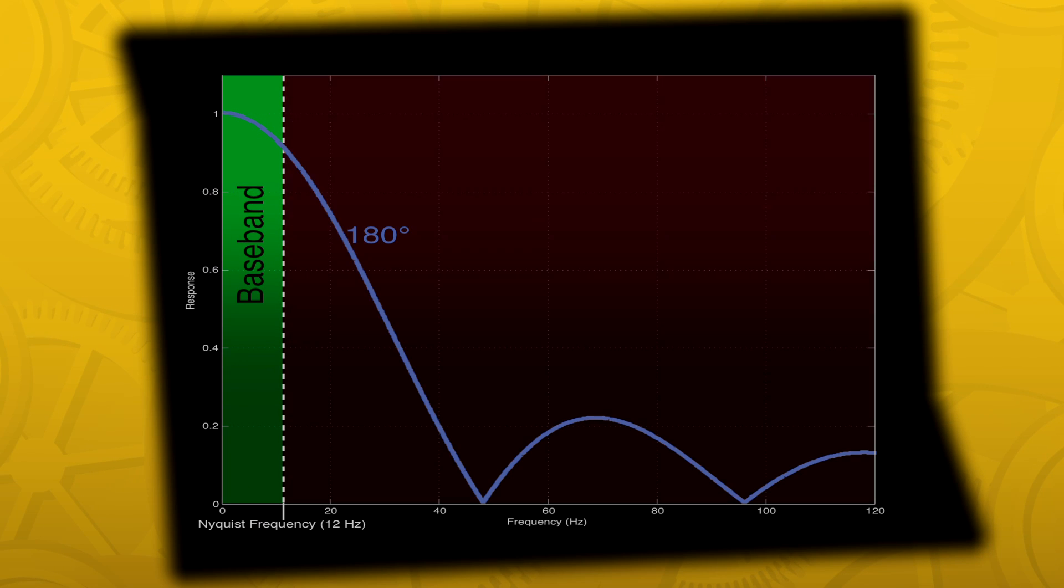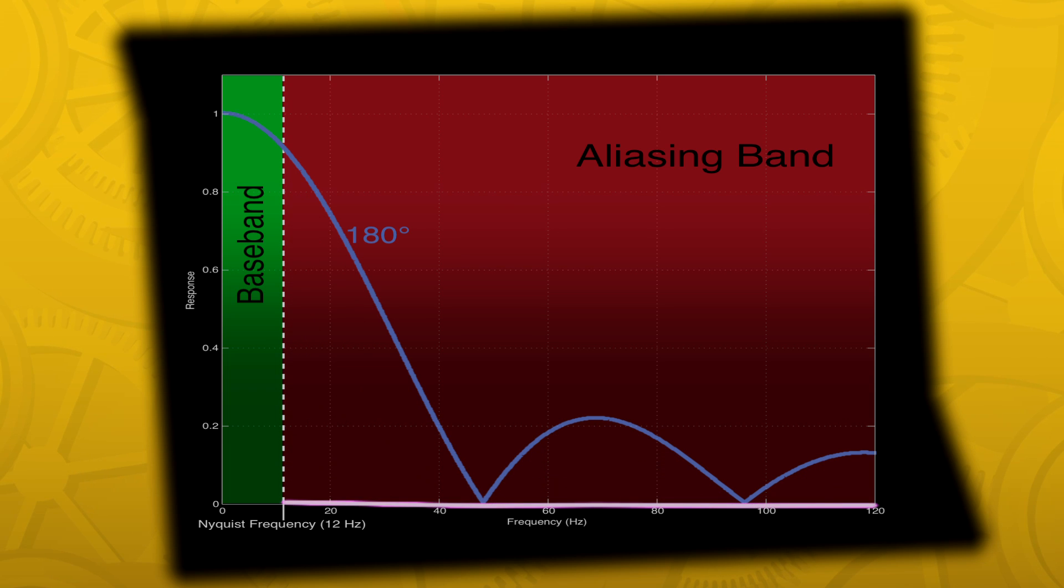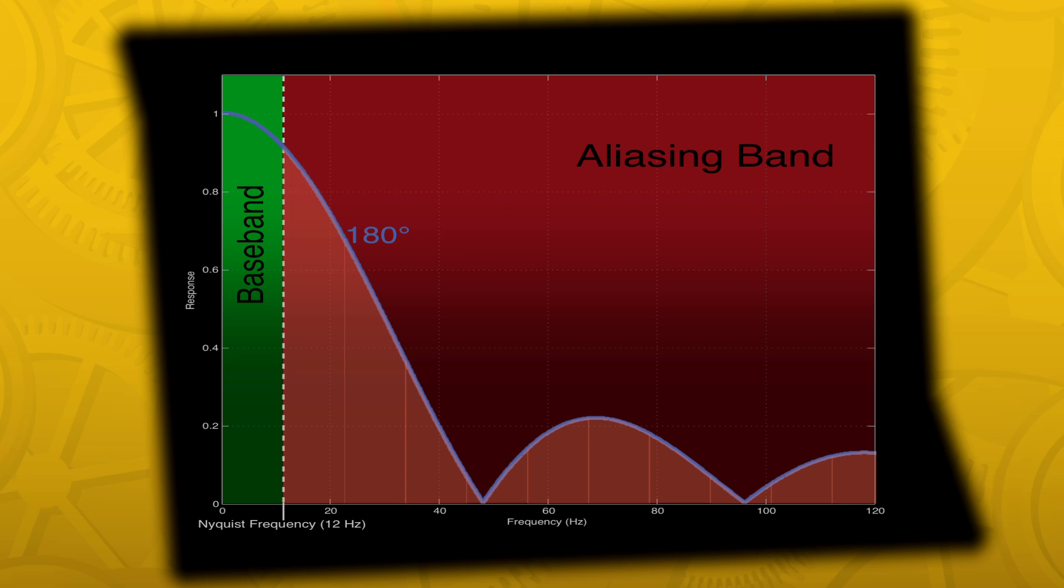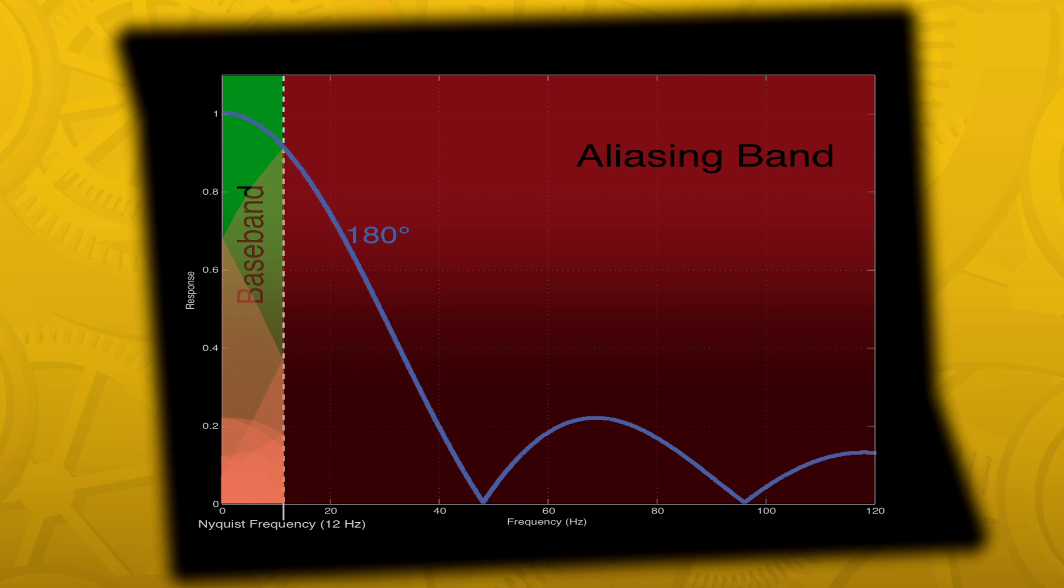Above that, in what we call the aliasing band, we want the response to be as low as possible, because anything in this band will become distortions and noise in our image. Real-world signals up here will get mangled and folded into the baseband. This is temporal aliasing.